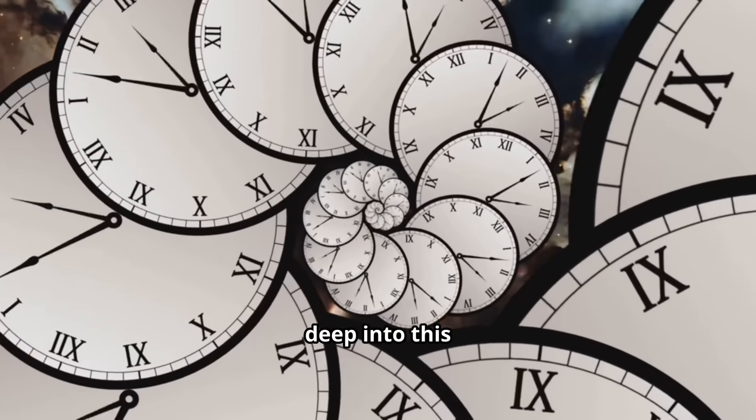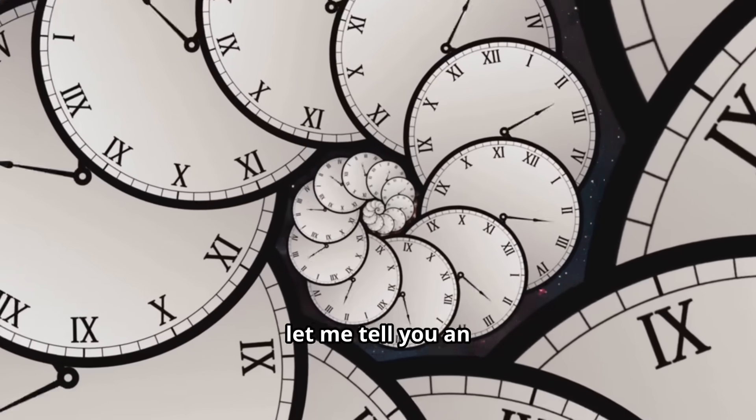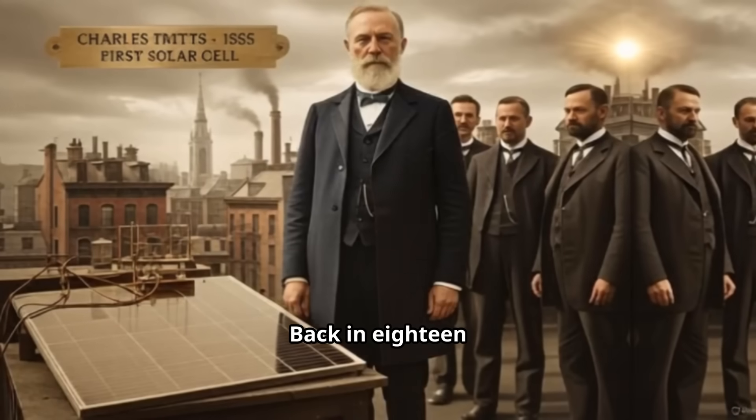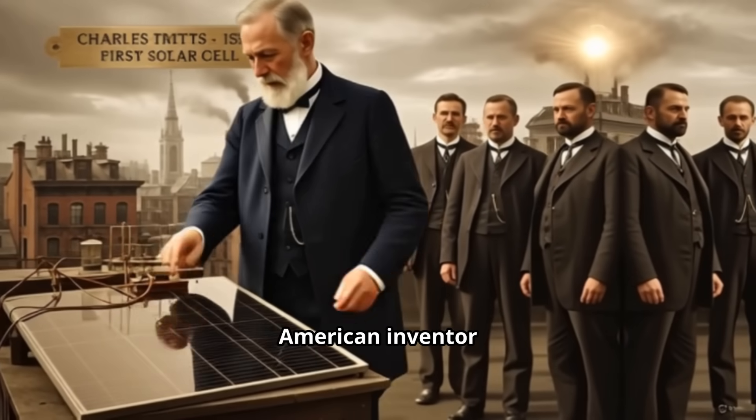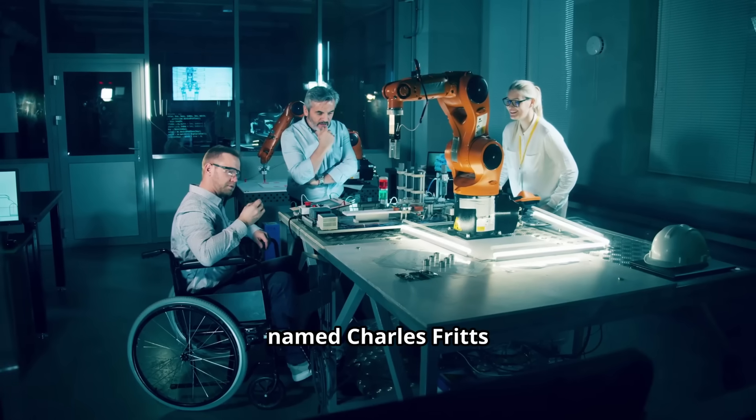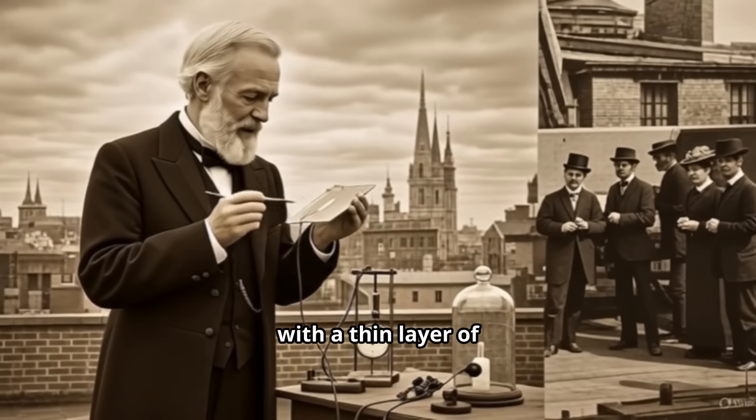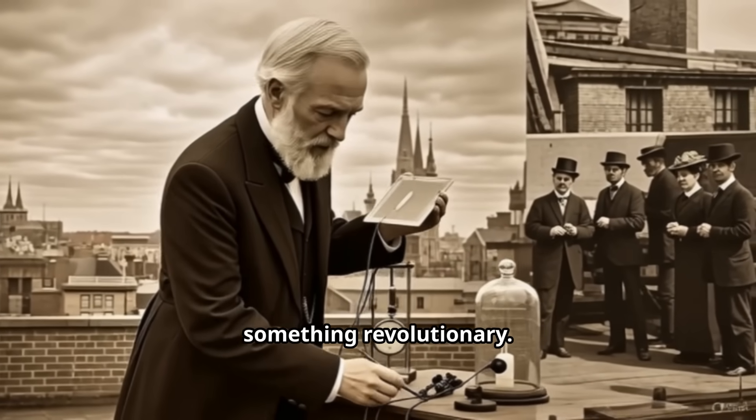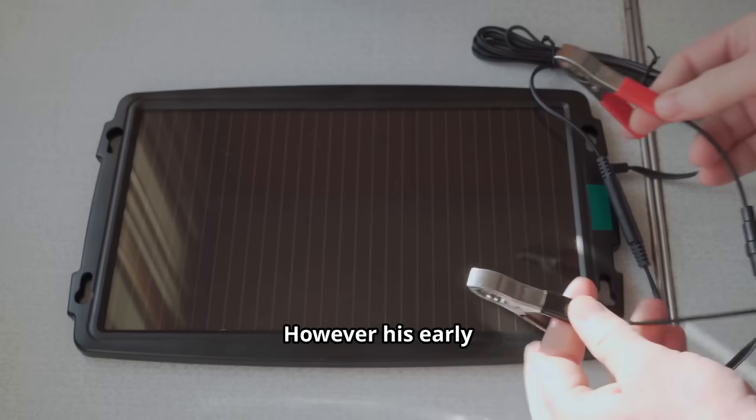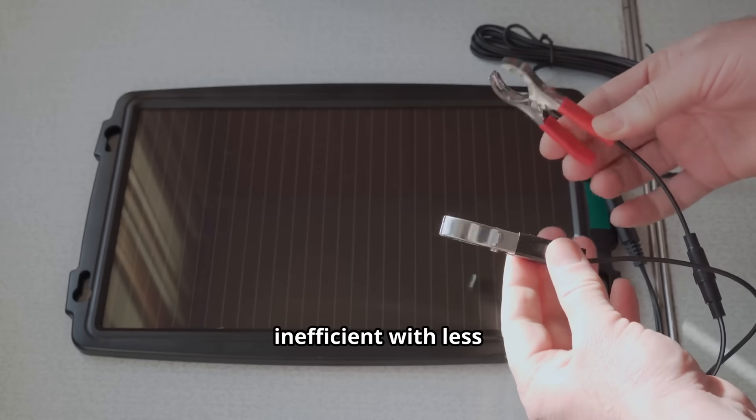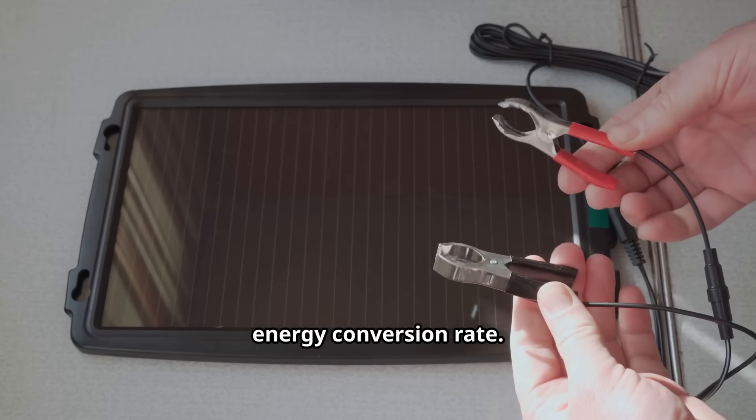But before we dive deep into this incredible technology, let me tell you an amazing story. Back in 1883, an American inventor named Charles Fritz created the first solar cell. He coated selenium with a thin layer of gold, creating something revolutionary. However, his early model was incredibly inefficient with less than 1% energy conversion rate.